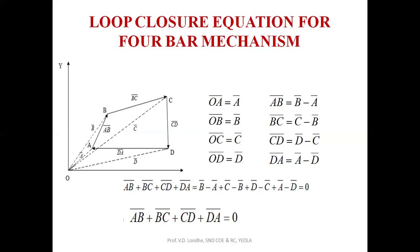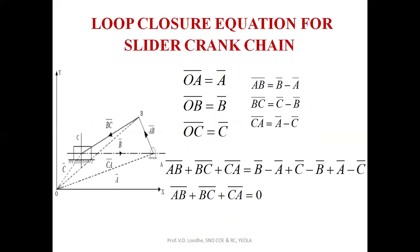As the loop closure equation states, the sum of relative position vectors for a given mechanism is always equal to zero. So AB bar plus BC bar plus CD bar plus DA bar equals zero — all the terms cancel out. This proves the loop closure equation for the four-bar chain mechanism.